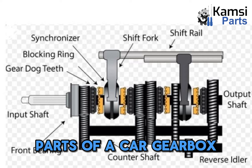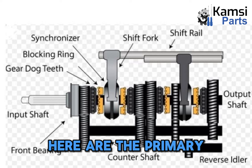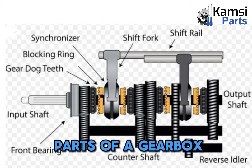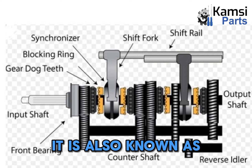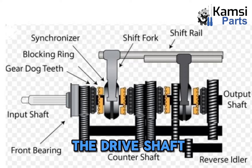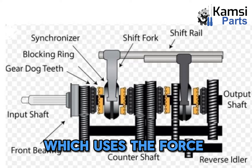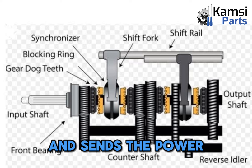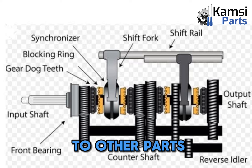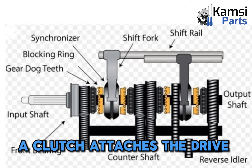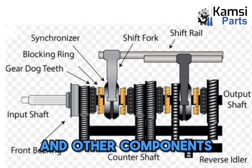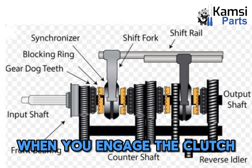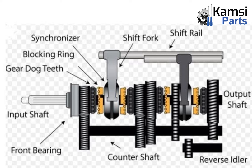Parts of a car gearbox — here are the primary parts. 1. Clutch shaft: it is also known as the drive shaft, which uses the force from the engine and sends the power to other parts. A clutch attaches the drive shaft to the engine and other components. When you engage the clutch, the drive shaft starts to rotate.